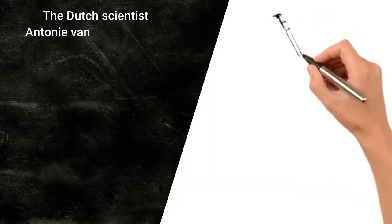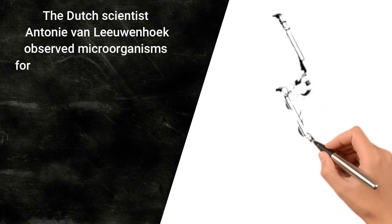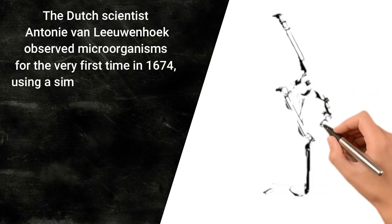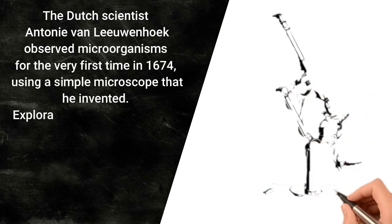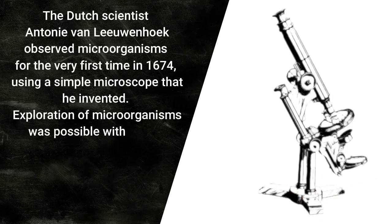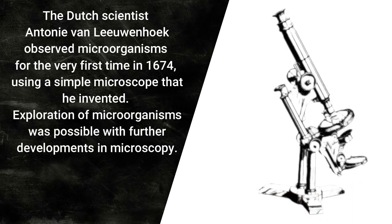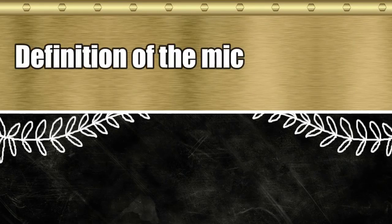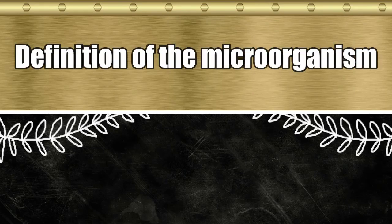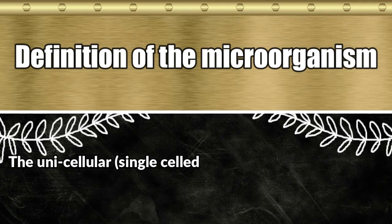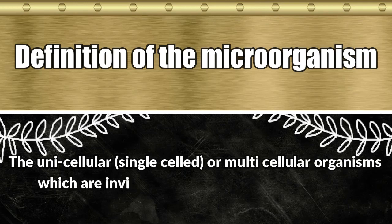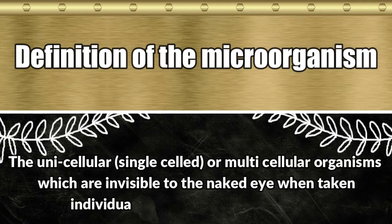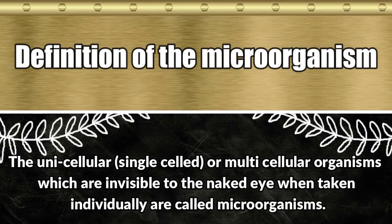The Dutch scientist Antonie van Leeuwenhoek observed microorganisms for the very first time in 1674 using a microscope that he invented. Exploration of microorganisms was possible with further developments in microscopy. The definition of a microorganism: unicellular or multicellular organisms which are invisible to the naked eye when taken individually are called microorganisms.